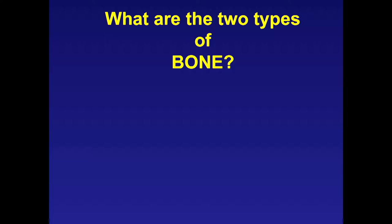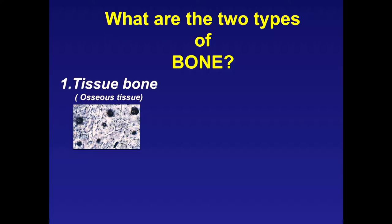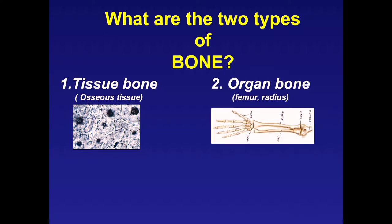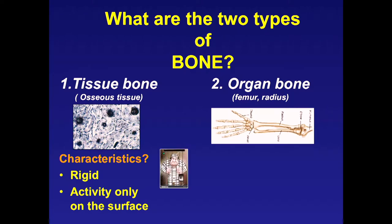Now we have two types of bone: tissue bone and organ bone. Tissue bone is a very rigid tissue. The osteocytes are only on the surface, locked up in the matrix of the bone. It doesn't expand, and once they get in there, they can't reproduce. So how is the bone going to reproduce?